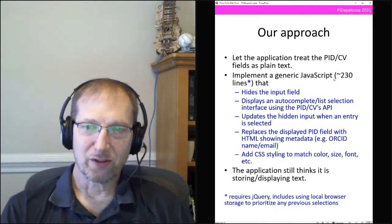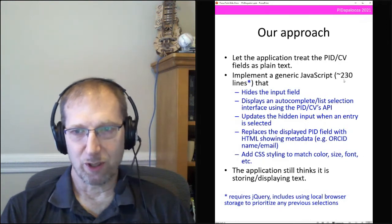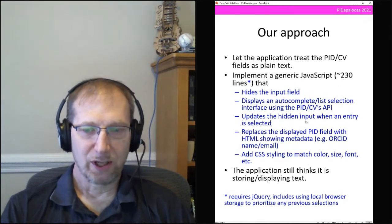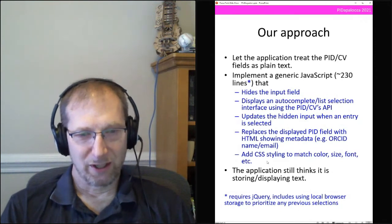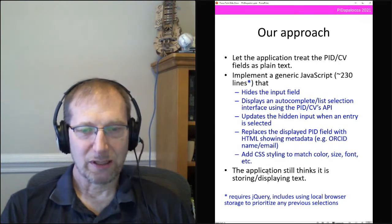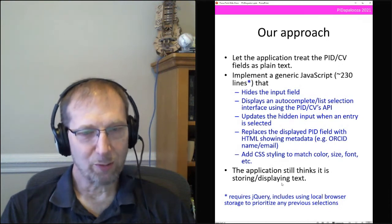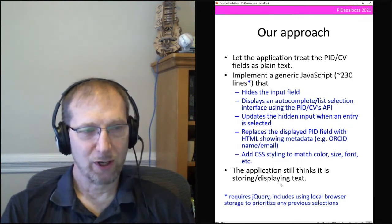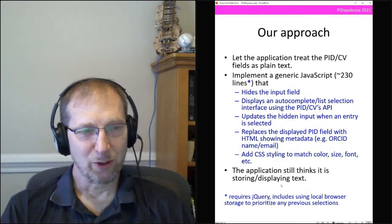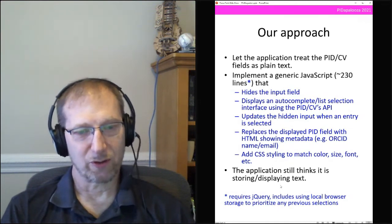This JavaScript is only about 230 lines — not that large. And I see people raising the issue of multiple names for the same person in ORCID. One thing this does is store the first search result in your local browser, so the second time you type someone like Nick Weber, he appears at the top because you've used him before. It prioritizes within search results the ones you've used in the past.